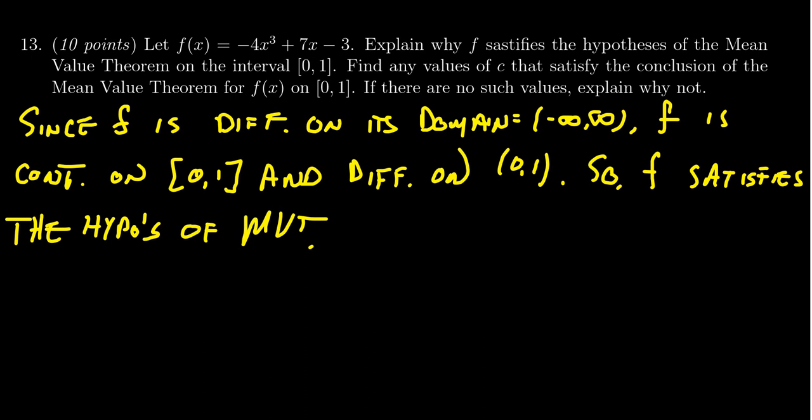So then what's the next thing? Find any values of c that satisfy the conclusion of the mean value theorem for f(x) on the interval [0,1]. If no such values exist explain why not. Well we've already said it satisfies the condition so therefore such a point has to exist. What points are guaranteed by the mean value theorem?